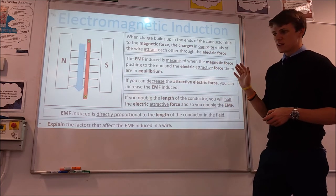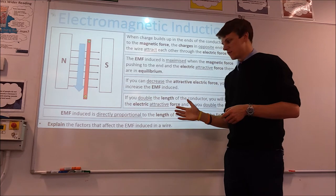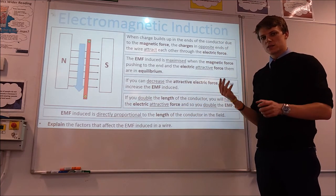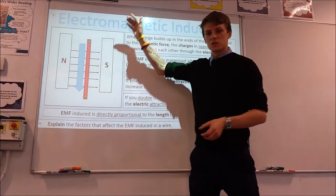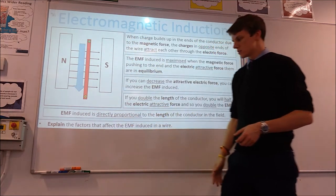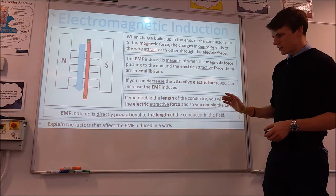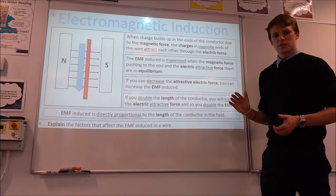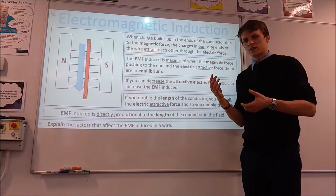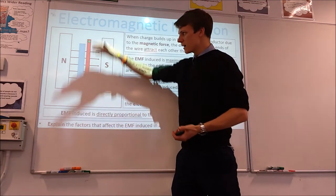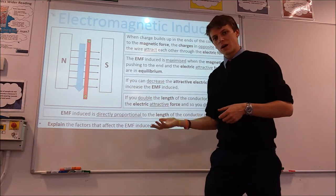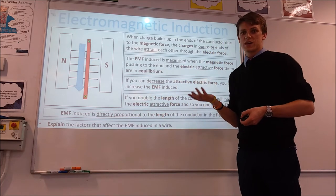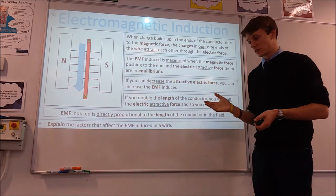The last factor is the length of the wire in the field. If you increase the length of the conductor, you decrease the electric force between the charges, which means the EMF is directly proportional to the length of the conductor in the field. In terms of what this physically looks like, if you have double the length of the conductor you can cut twice as many flux lines using the same conductor, which gives you double the EMF.